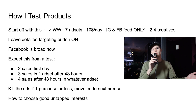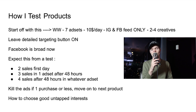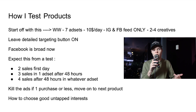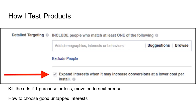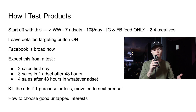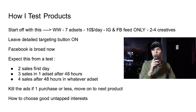So it's seven ad sets at $10 a day on Instagram and Facebook feed. I use two to four creatives — three pictures and one video, or two pictures and one video. Use a video and a couple of pictures unless it really is a picture product. Leave the 'Detail Targeting Expansion' button on — a lot of people tell you to uncheck it, but Facebook is broad now, so go broad. Let Facebook do its job. That expansion is super powerful, especially in testing. You can split test it on and off later in the scaling phase.